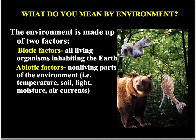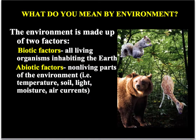The environment is made up of two sets of things: biotic factors and abiotic factors. Biotic factors are everything that's actually alive — like the squirrel, the bear, the deer, and the trees in the picture. Abiotic factors are everything that's not alive, like the actual ground, rock, wind, light, and sun. So biotic is living and abiotic is non-living.